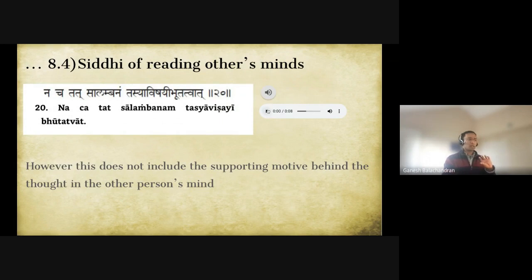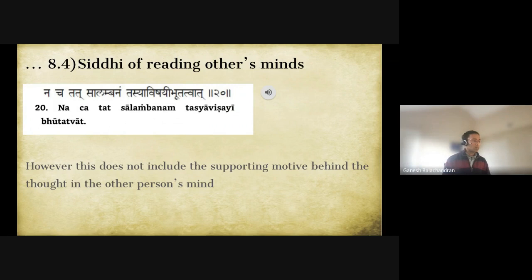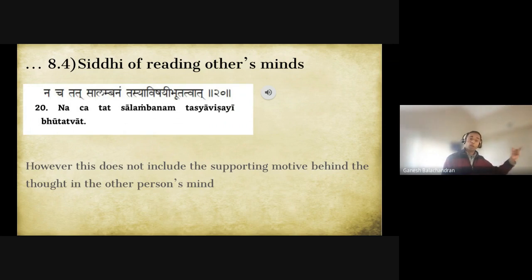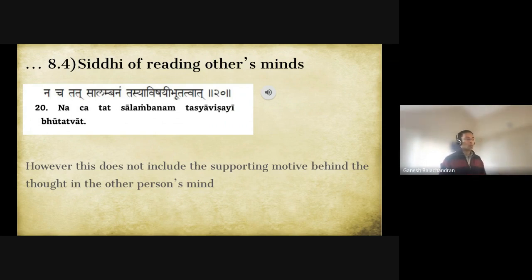Patanjali gives exclusion criteria — the sutras are very scientifically written. For example, you can read fear in somebody's mind, but you would not be able to know what caused that fear — which is the support or reason behind it. That knowledge is excluded, Patanjali says.